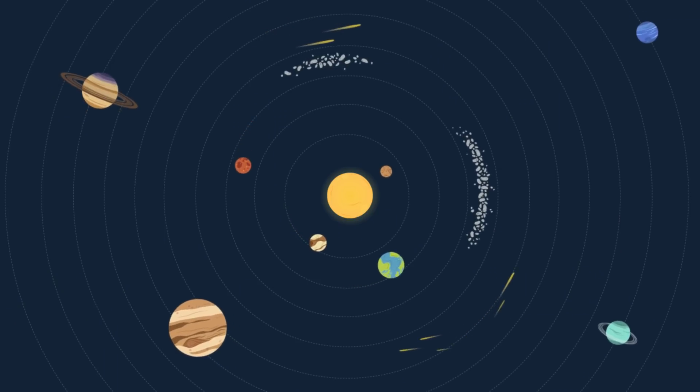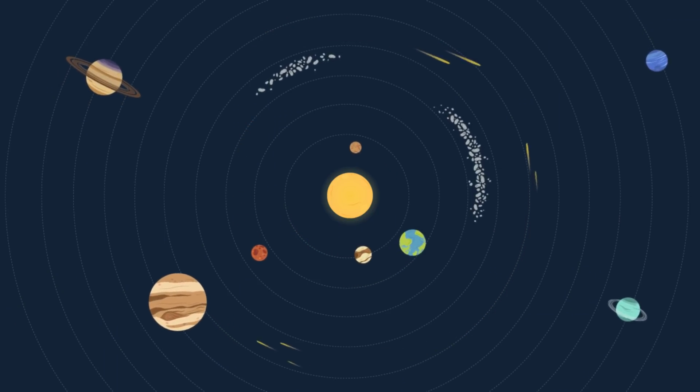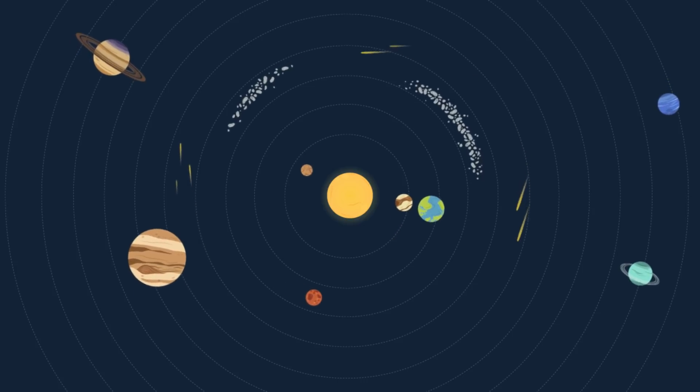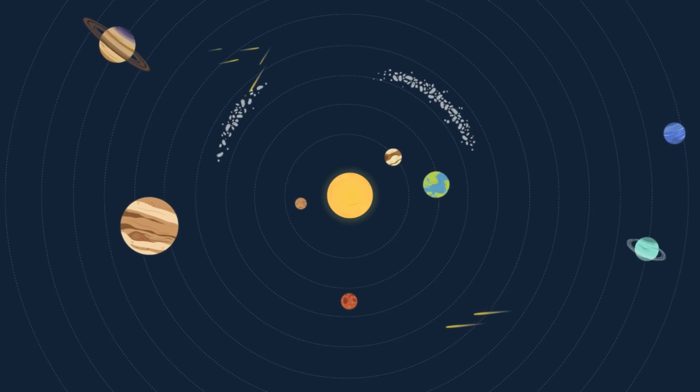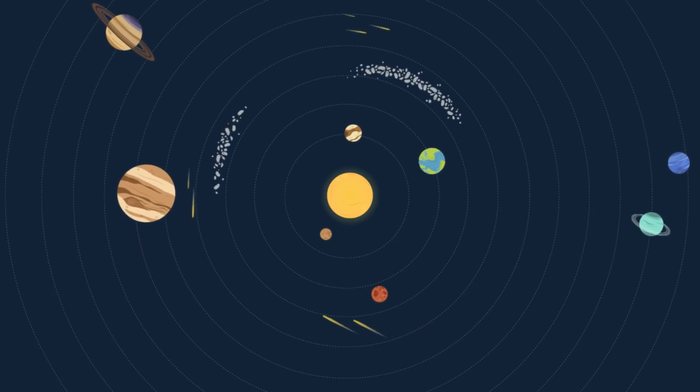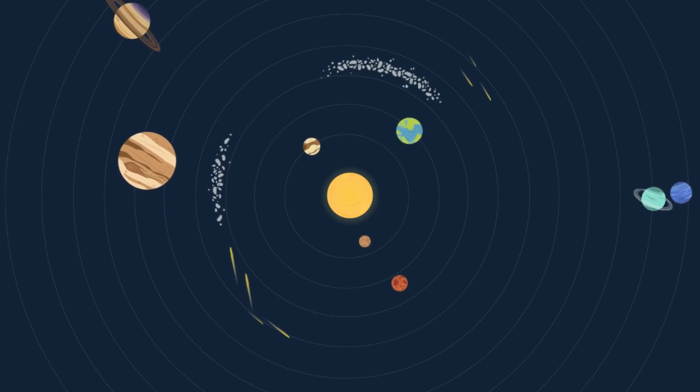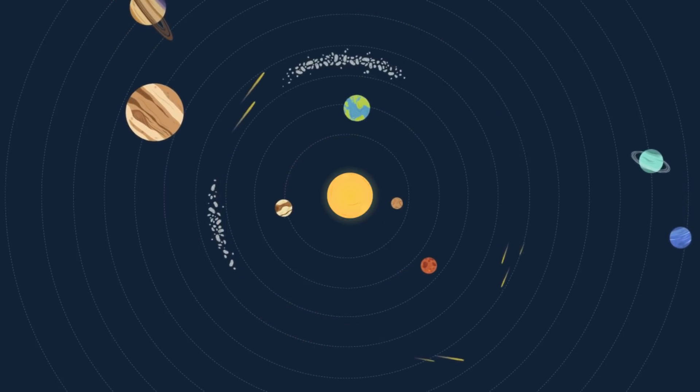Not only is Jupiter taking hits for us from comets and asteroids, it has locked asteroids into orbital resonance. This means some asteroids share Jupiter's 12-year orbital period, while others have orbital periods of 3, 6, 8 years, keeping those asteroids from our orbit.